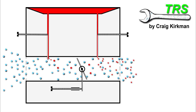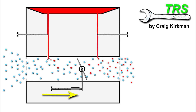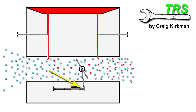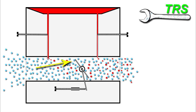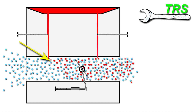Now let's look at the idling speed. Adjusting the idling screw clockwise mechanically pushes on the lever of the throttle butterfly, and the more it screws in the more the butterfly opens, allowing more air into the carburetor which pulls out more fuel from the main jet — as a result engine revs rise.